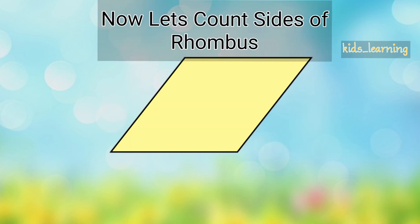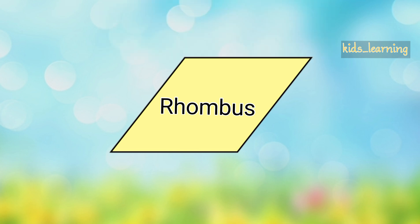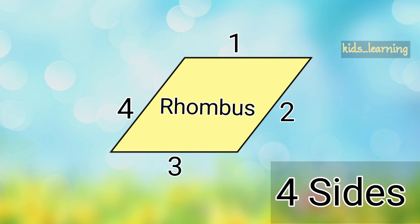Now let's count the sides of a rhombus. 1, 2, 3, 4. A rhombus has 4 sides.